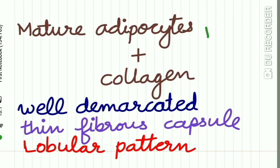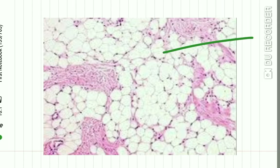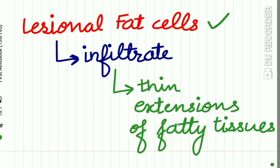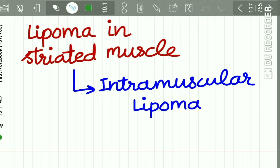Lipoma is a well-demarcated lesion with a thin fibrous capsule and lobular appearance. Here you can see mature adipocytes with fibrous bands in between them. The lesional fat cells may sometimes infiltrate and form thin extensions of fatty tissue.